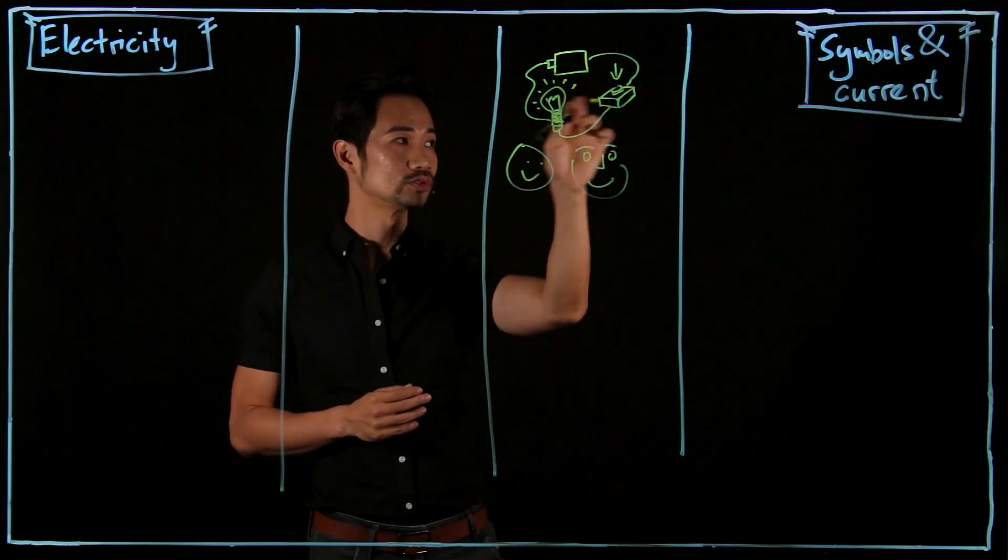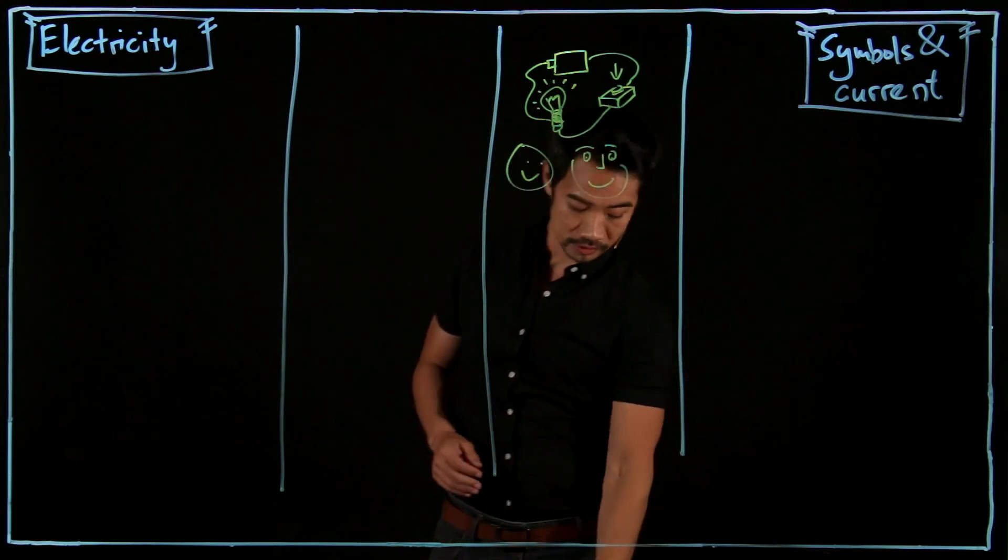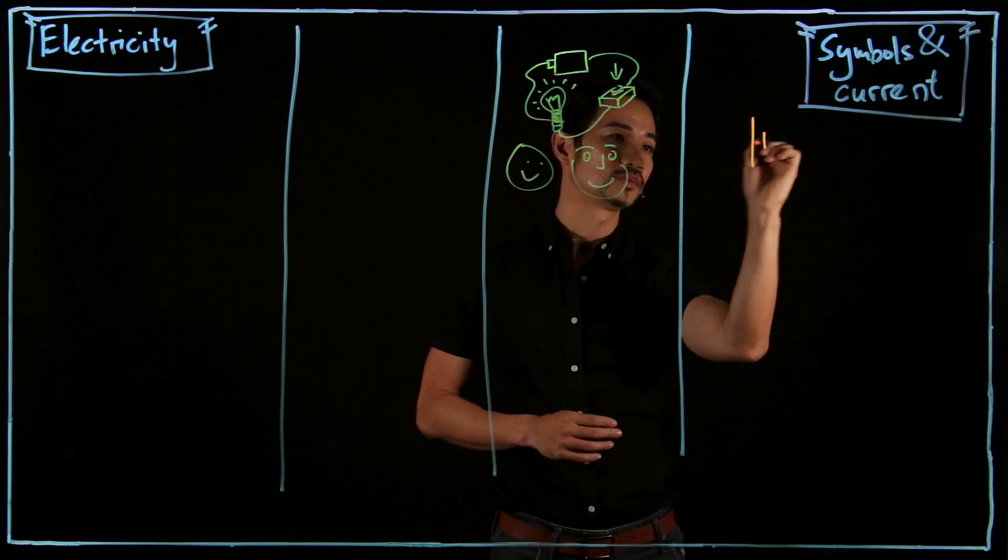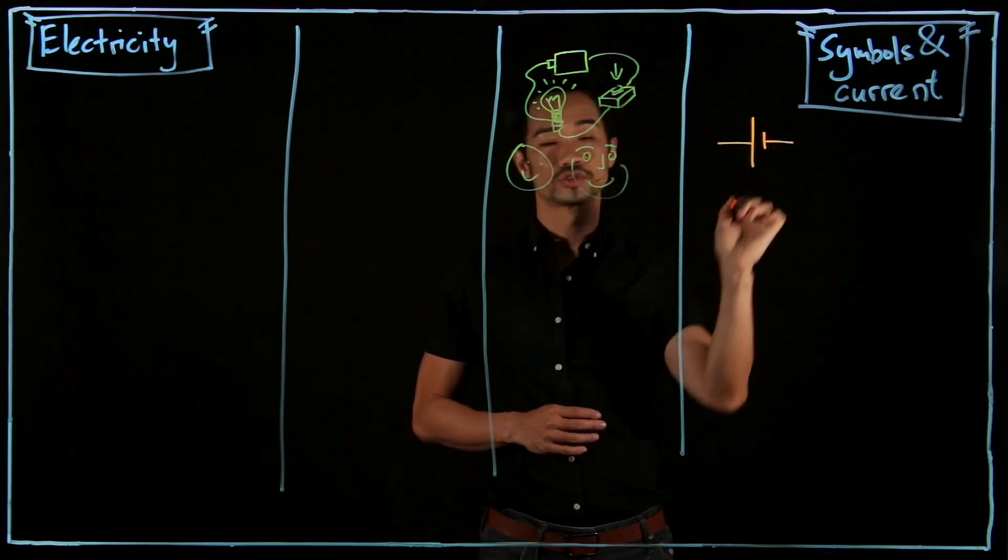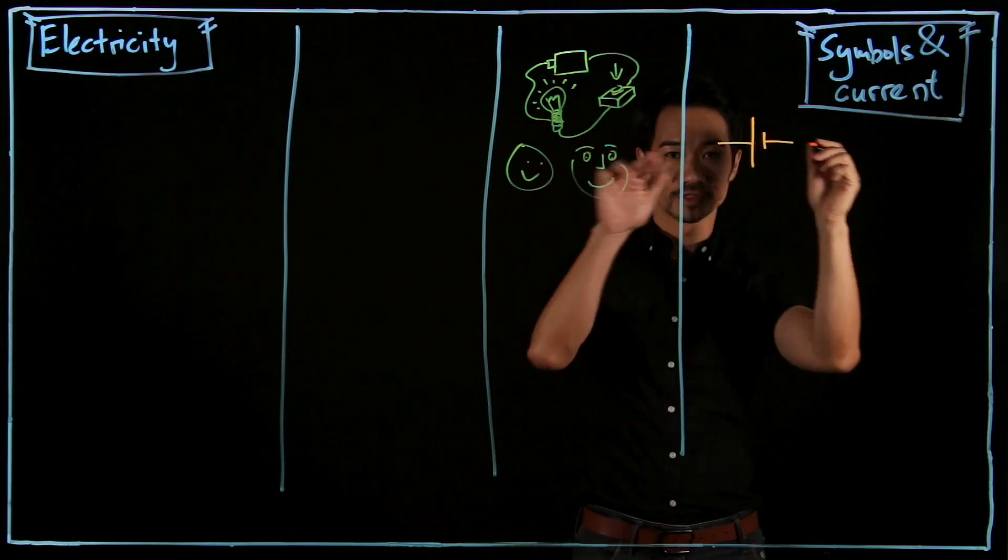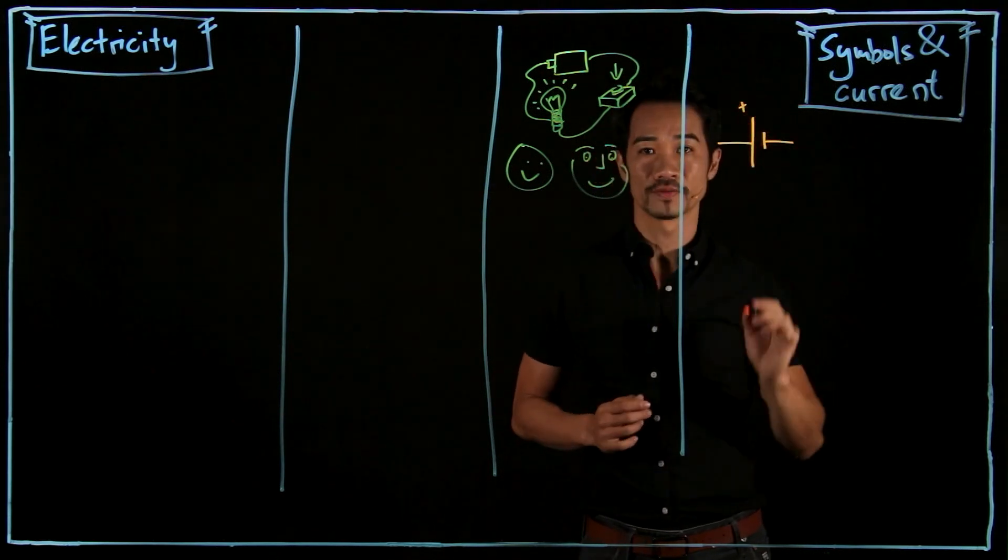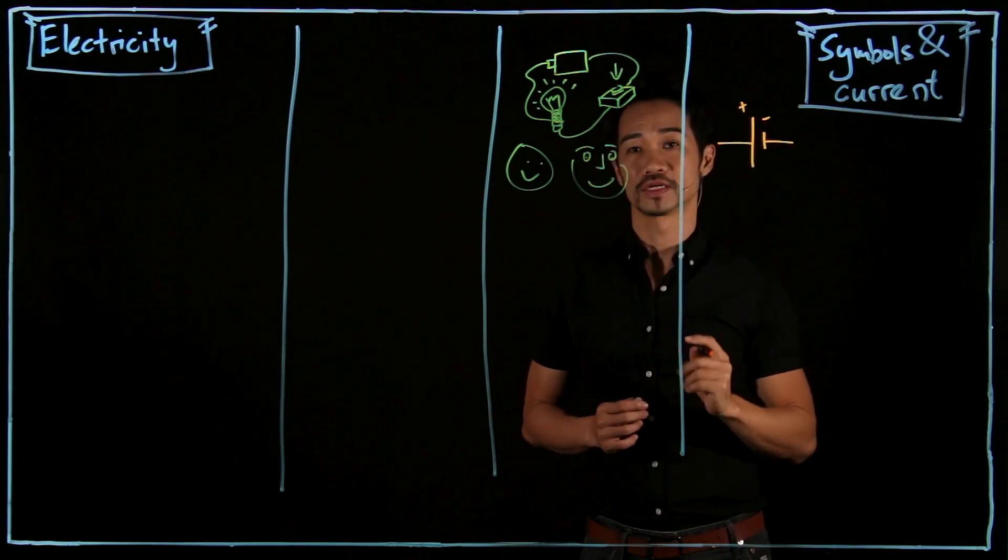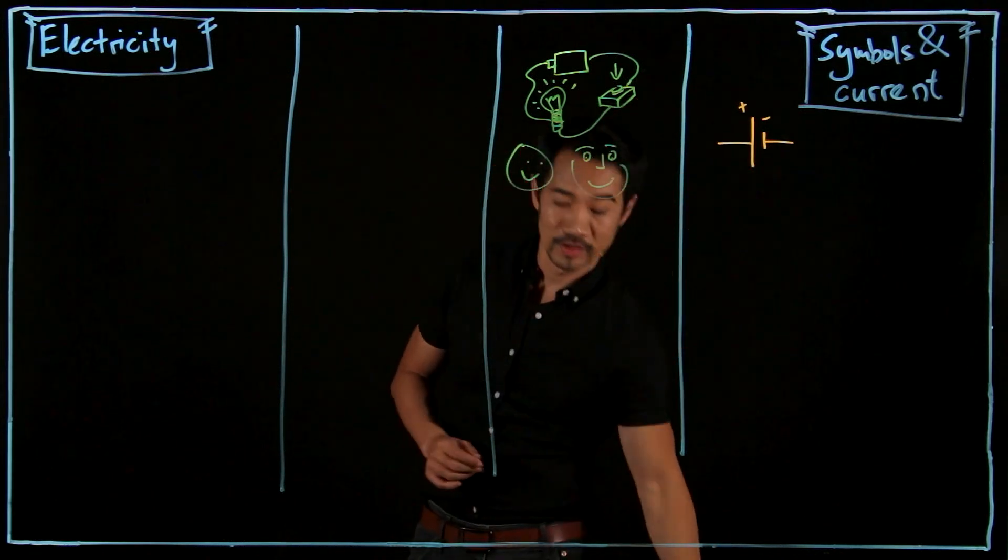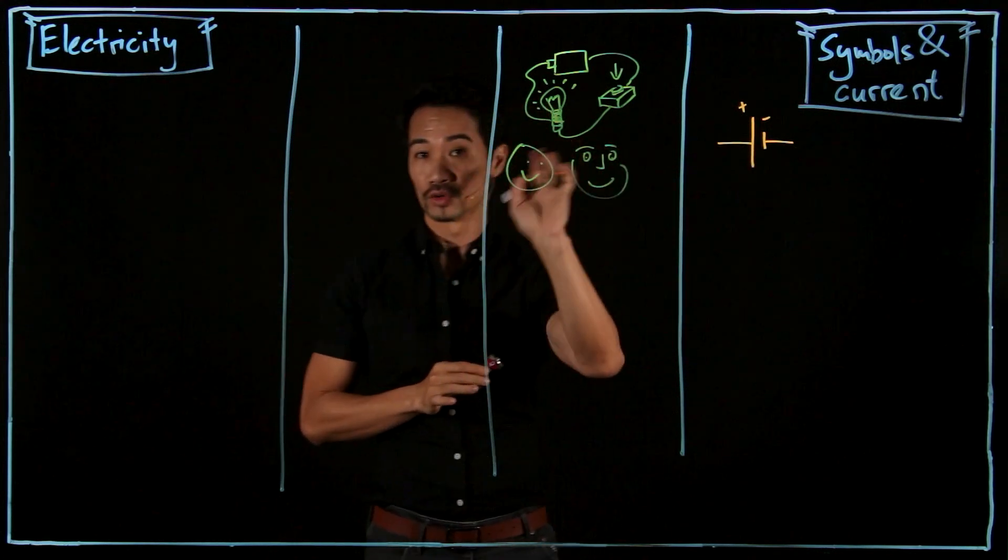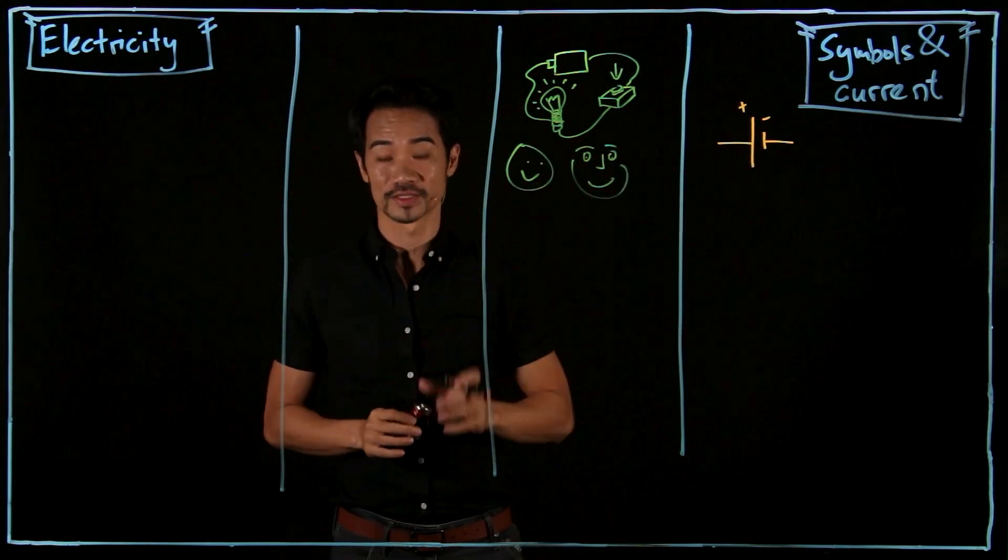So first of all, the dry cell. We don't draw it like that. The dry cell, we actually draw it like this. We use two lines, a long line and a short line. These two lines at the side represent the wire. The long line actually represents the positive side, the short line, the negative side. So this is very different from the actual battery. So don't think that this pimple over here is the short line. No, the long line is the plus side.